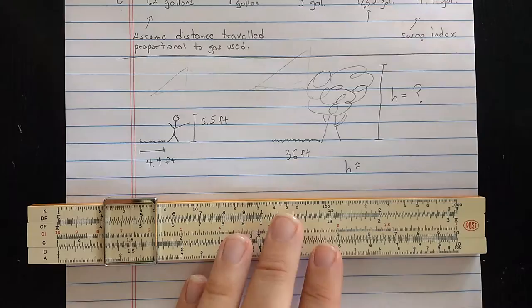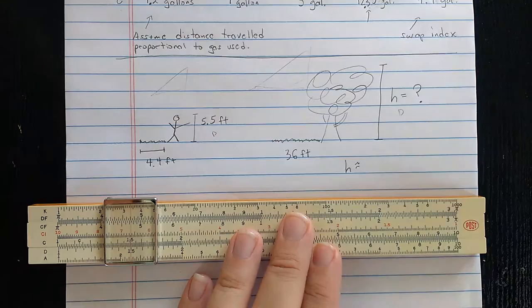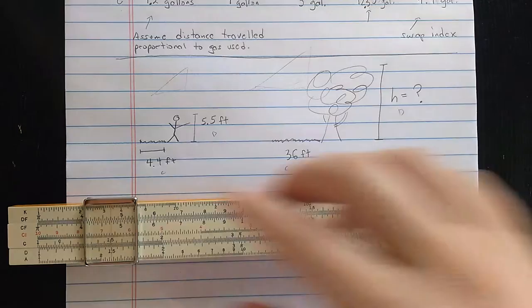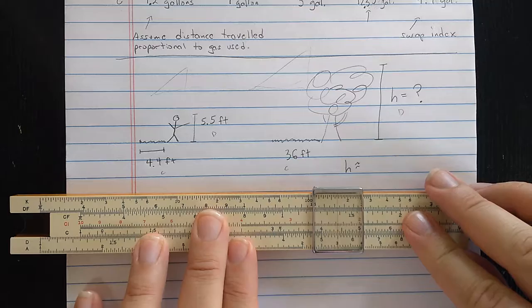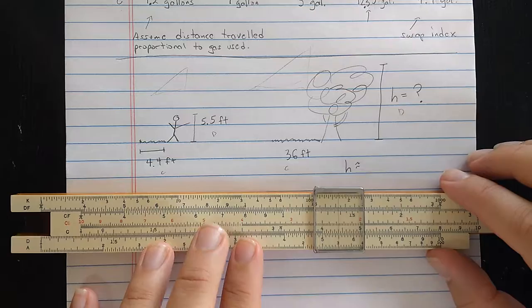Well, what should I do here? Let's assume we want the result on the D scale. So I'm going to put the height here on the D scale of both things, and the shadow length on the C scale of both things. So let's find the 5.5 on the D scale and align that with the 4.4 on the C scale.